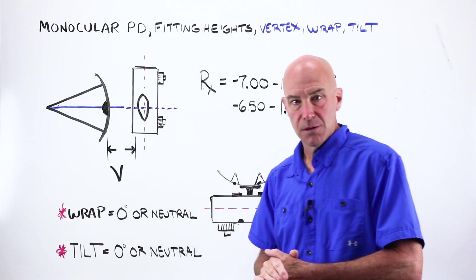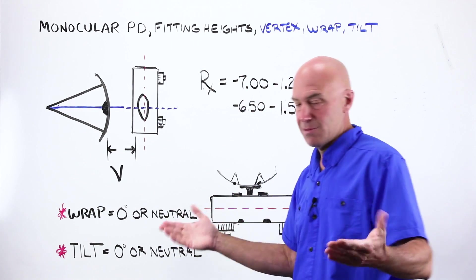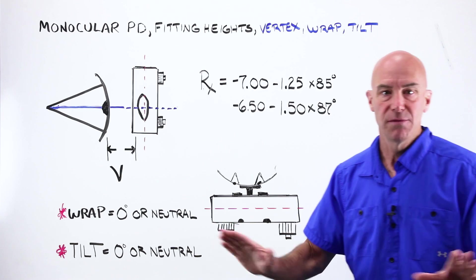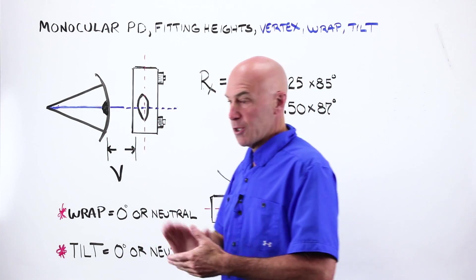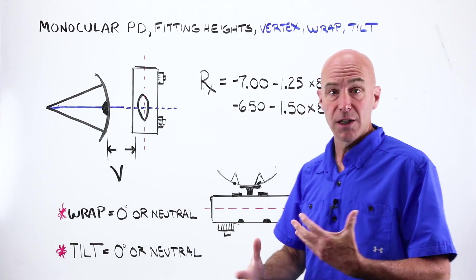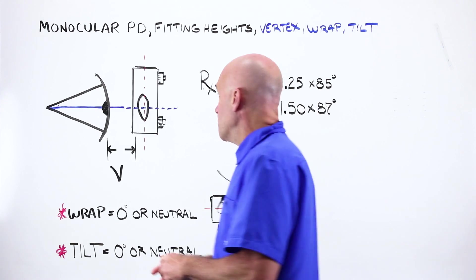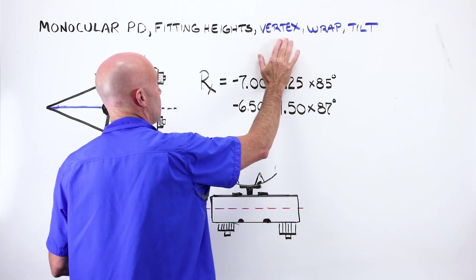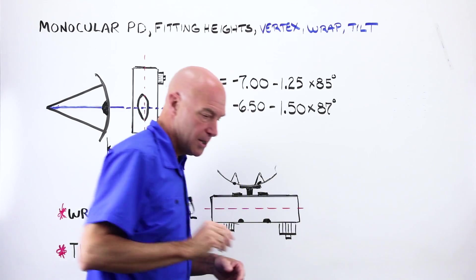In ordinary day-to-day optical dispensing, up until, let's just throw the number out there, 25 years ago, you are familiar with monocular PDs, taking fitting heights for lined bifocals, progressive lenses. We never really took much account for vertex depth or distance, wrap and tilt.